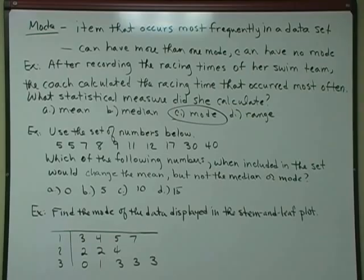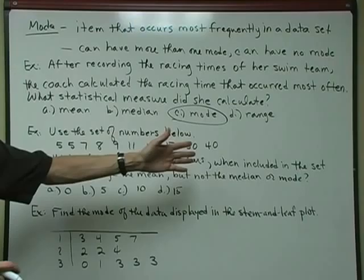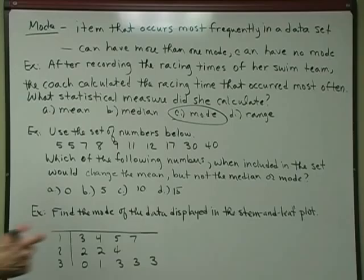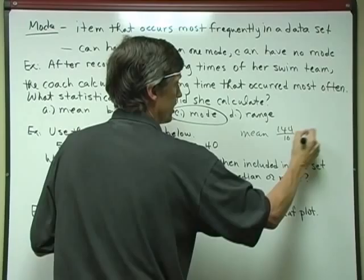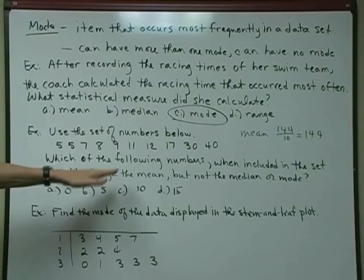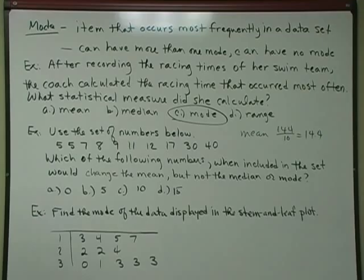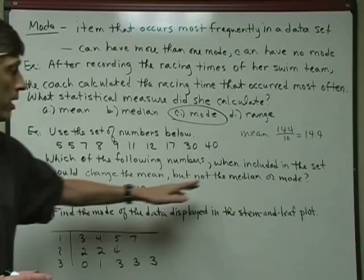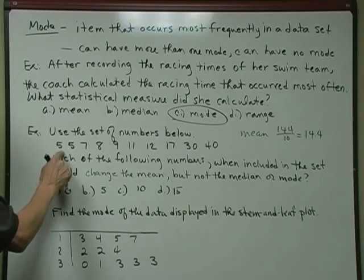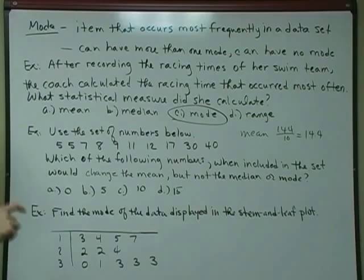Next one up. Use the set of numbers below: 5, 5, 7, 8, 9, 11, 12, 17, 30, and 40. Which of the following numbers, when included in the set, would change the mean, but not the median or the mode? Well, to find the mean, first off, there are 10 numbers. If you add them all together, you get 144, so if you divide 144 by 10, the mean, 144 by 10, is 14.4. So any of these choices down here is going to change the mean, because the only one that wouldn't is if I had one of the choices be the mean itself.